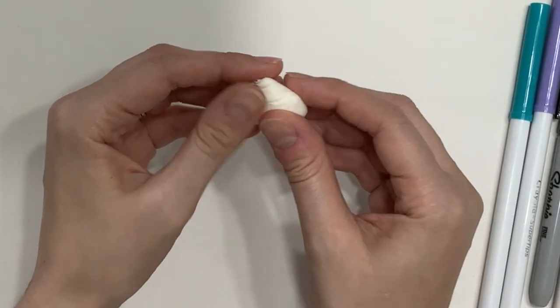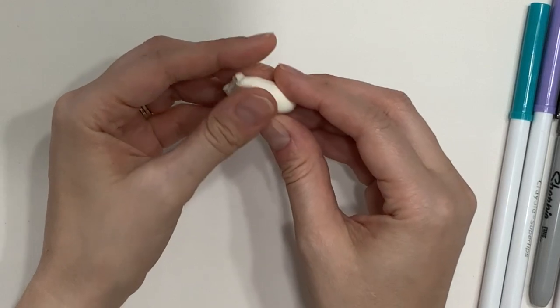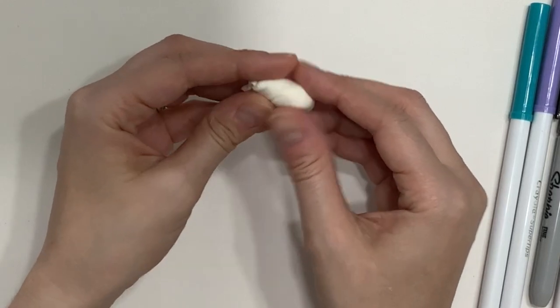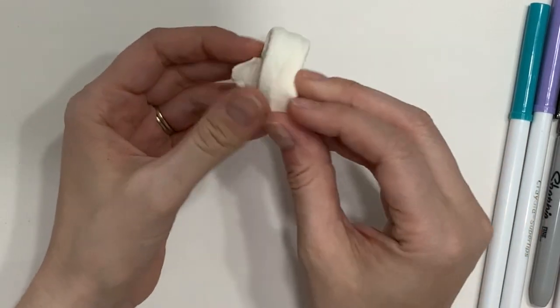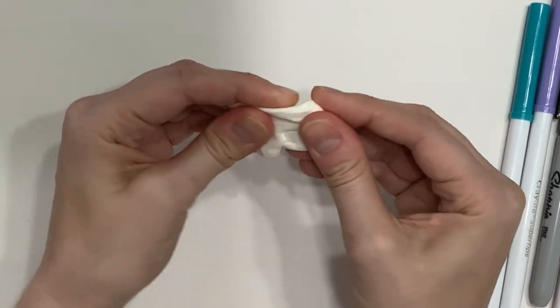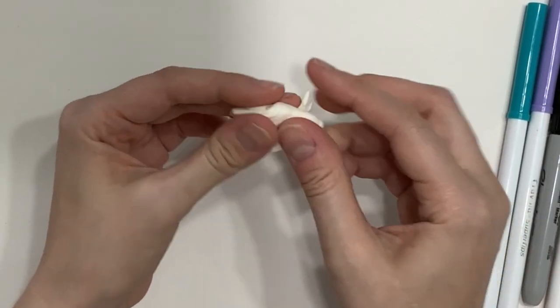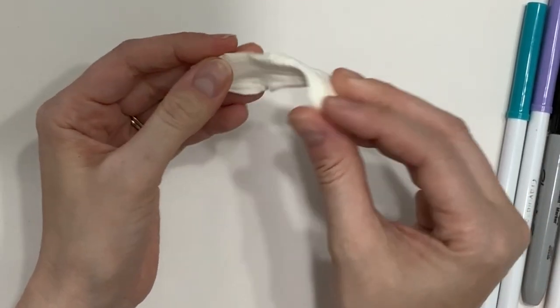One of the ways that Model Magic is different than clay is that when you work with clay, the more you handle it and hold it and work with it, it's going to start to dry out. But with Model Magic, your hands will actually soften the Model Magic. So the more that you hold on to it and work with it, it's going to get softer and more malleable.